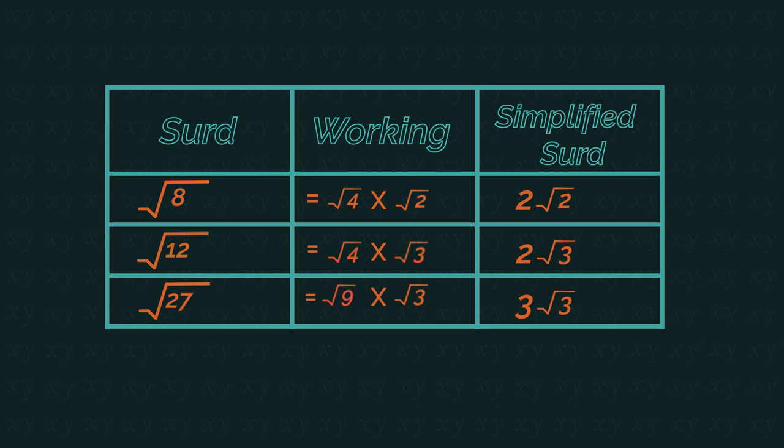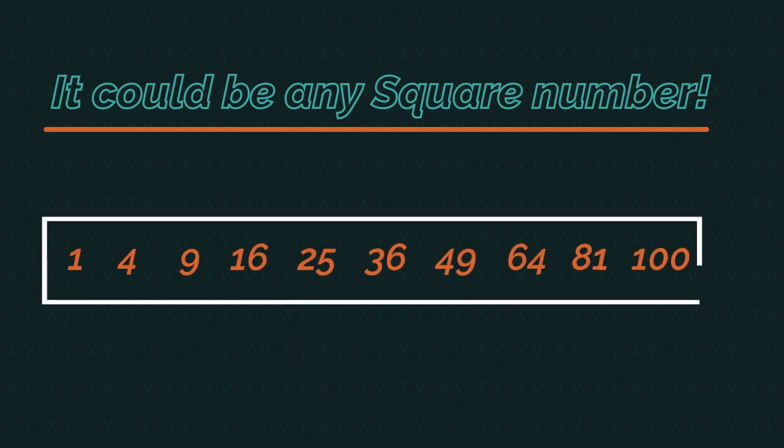In this one, root 9 is the square number, multiplied by 3 makes 27. It could be any square number: 16, 25, 36, 49. Make sure you know your square numbers.